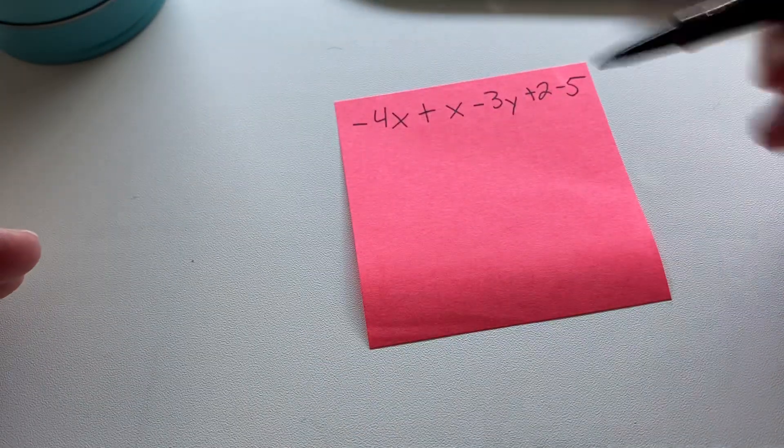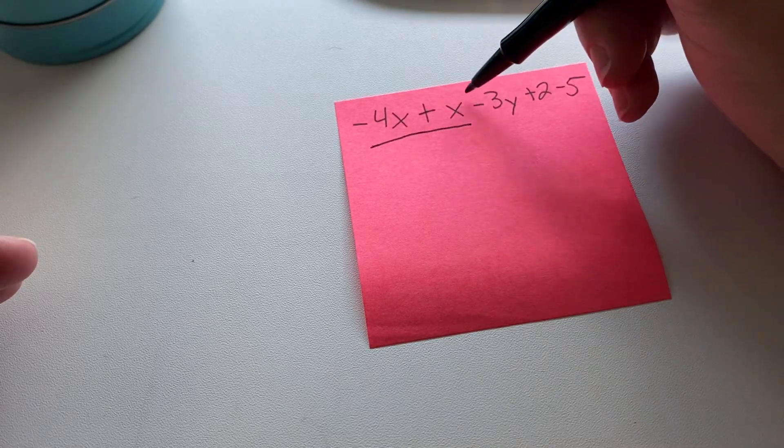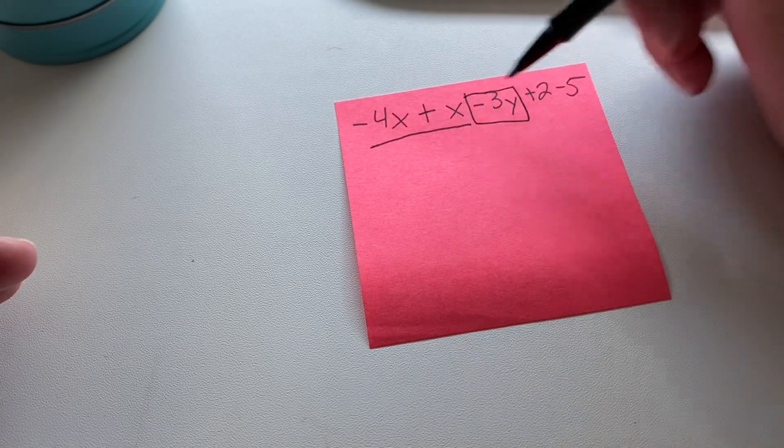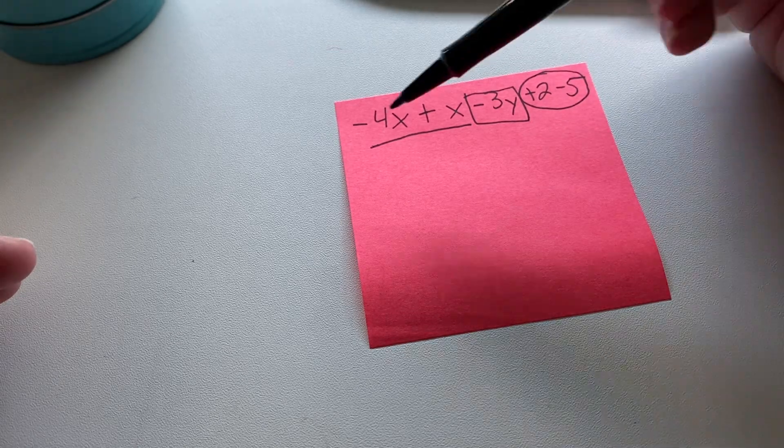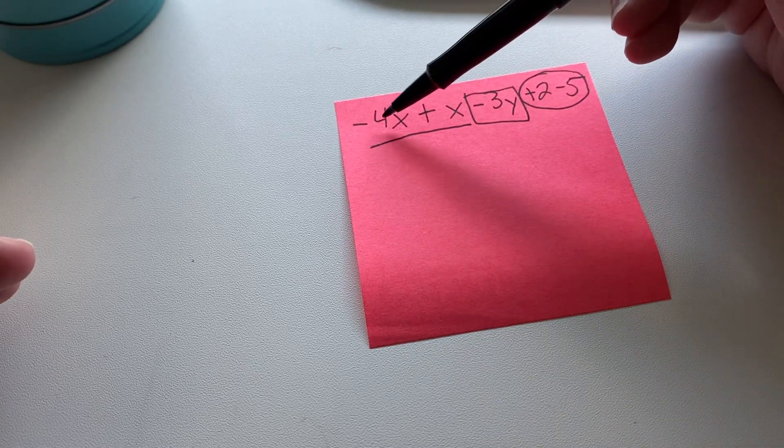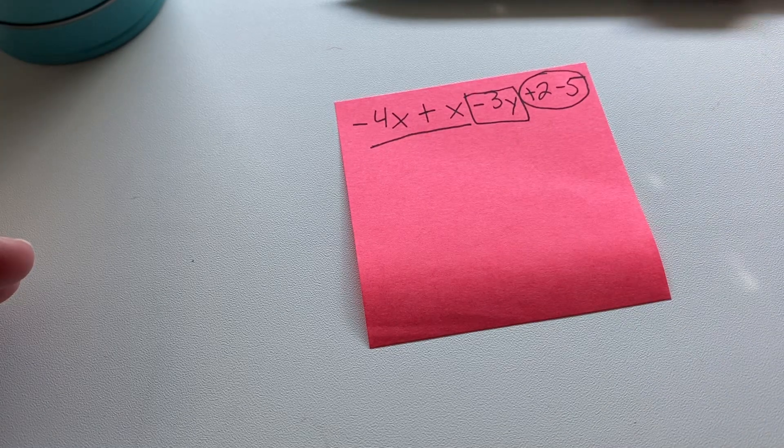Let's see what that looks like with an example. So here we have our x's, our y's, and here are our constants. As you can see here, we have a negative four and a positive one for our x's. So we're going to use our rules.